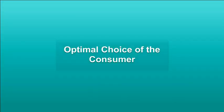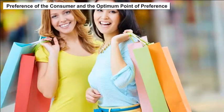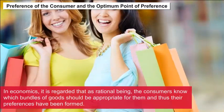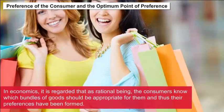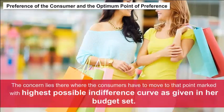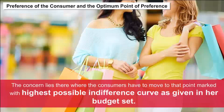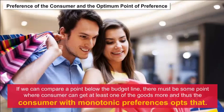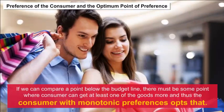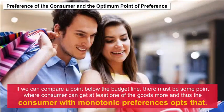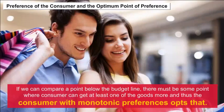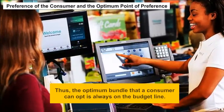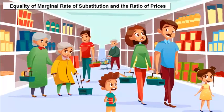Optimal choice of the consumer: As rational beings, consumers know which bundles of goods are appropriate for them, and their preferences are formed accordingly. The concern lies in moving to the highest possible indifference curve within a given budget set. If we compare a point below the budget line, there must be some point where the consumer can get at least one more unit of a good. With monotonic preferences, the optimum bundle is always on the budget line.